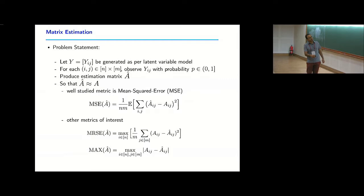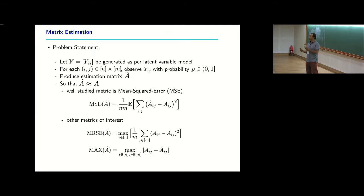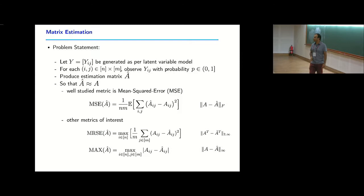Two other error metrics of interest. The first — call it MRSC — looks at squared error in any given row and takes the maximum over all rows (or columns). The second is the maximum over all entries. The max metric is much more stringent than Frobenius. These correspond respectively to the normalized Frobenius norm, the row/column max norm, and the entry-wise infinity norm of matrices — just playing with all the matrix norms, each enabling different applications.